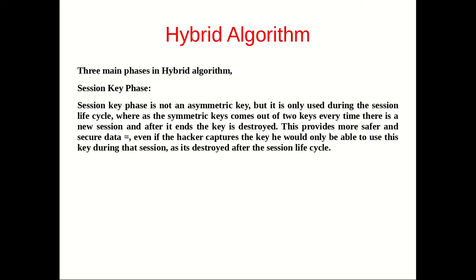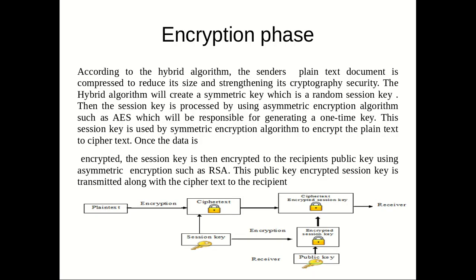Let's look at the three hybrid algorithm phases. We've got the session key phase. The session key phase is not an asymmetric phase, but it generates session keys to all users who are trying to log in or access the data. When the session is expired, the key is expired — so it's going to be very difficult for hackers to access the same data once the session is finished.